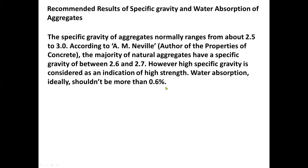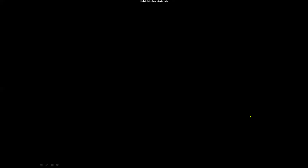For the recommended results of specific gravity and water absorption of aggregates: the specific gravity of aggregates normally ranges from about 2.5 to 3.0. According to Neville, author of 'Properties of Concrete', the majority of natural aggregates have a specific gravity of between 2.6 and 2.7. Specific gravity is considered an indication of aggregate strength, and water absorption ideally should not be more than 0.6%. Thank you very much, and God bless us all.